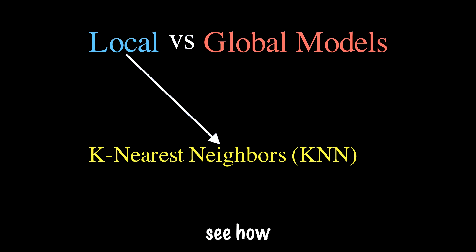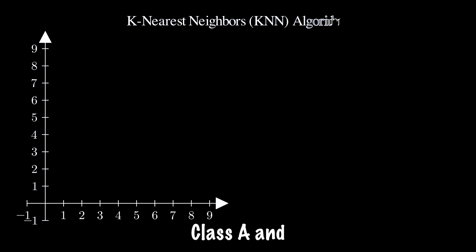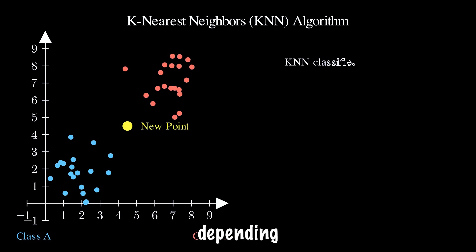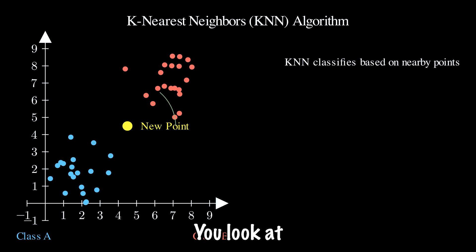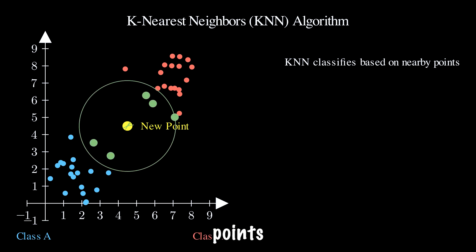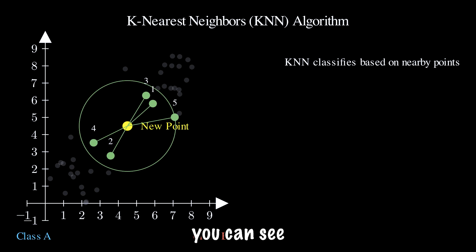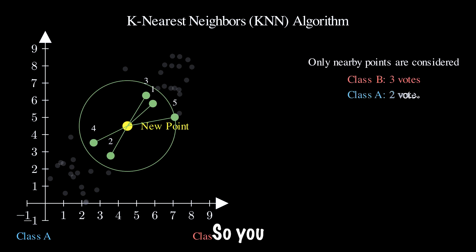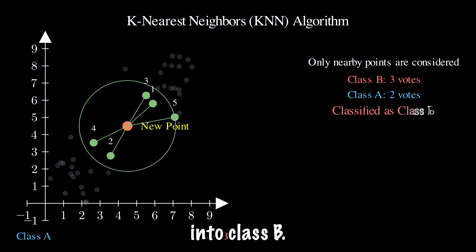Let's see how KNN works. Assume you have two classes — class A and class B — and you have a new data point. Depending on the neighboring points, with K equal to 5, you look at how many neighboring points belong to class B and class A. In this scenario, three data points belong to class B and two belong to class A.